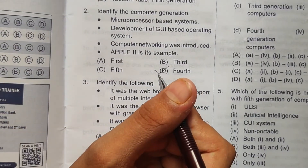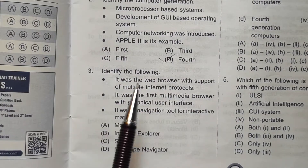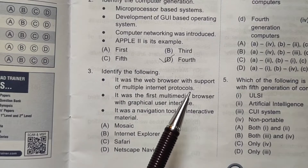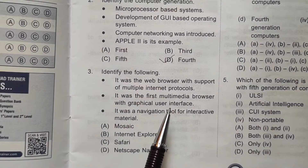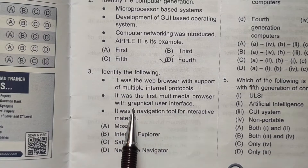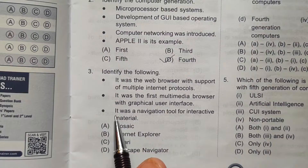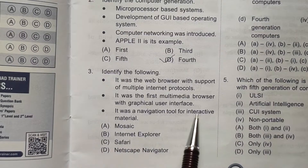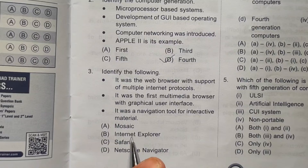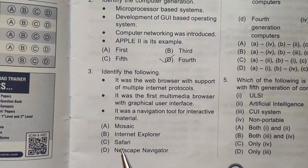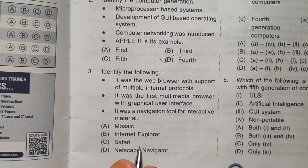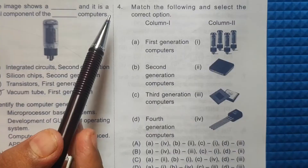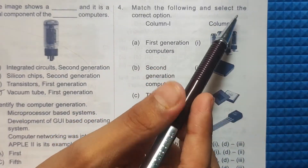Third question: identify the following — it was a web browser with support of multiple internet protocols, the first multimedia browser with graphical user interface, and a navigation tool for interactive materials. The options are: A) Mosaic, B) Internet Explorer, C) Safari, D) Netscape Navigator. The given description matches Mosaic, so the correct answer is option number A.